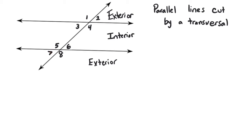So if we had angles two and seven, those would be alternate exterior angles because they're on opposite sides of the transversal and on the exterior. One and eight would also be alternate exterior angles. And if we had four and five, those would be alternate interior angles because they're on alternating sides of the transversal and on the interior. Three and six would also be alternate interior angles.